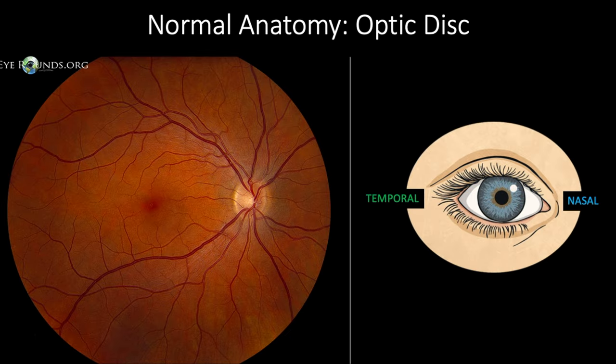First we're going to start off with the normal anatomy of the retina. On this slide we have a fundus photo of a normal retina. When describing the fundus there are four areas you want to examine closely: the disc, the vessels, the macula, and the periphery.